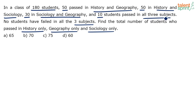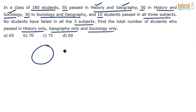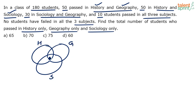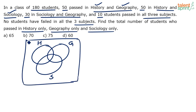The total strength is 180 and there are three subjects: History, Geography, and Sociology. The easiest way to solve this question is by using Venn diagrams and set theory. We represent each subject with a circle, and the combination of these sets forms a Venn diagram. There are three subjects, so let's represent each with a circle — the first represents History, the second Geography, and the third Sociology. The rectangle around them is the universal set.